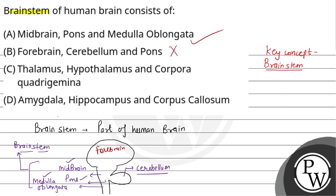Option C includes thalamus, hypothalamus and corpora quadrigemina. The thalamus and hypothalamus are parts of the forebrain, so Option C is incorrect. Option D includes amygdala, hippocampus and corpus callosum, which also belong to the forebrain, so Option D is also incorrect.